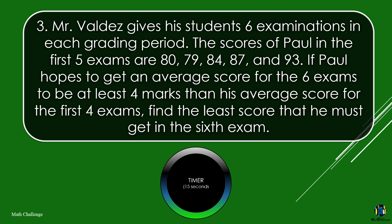Mr. Valdez gives his students six examinations in each grading period. The scores of Paul in the first five exams are 80, 79, 84, 87, and 93. If Paul hopes to get an average score for the six exams to be at least four marks more than his average score for the first four exams, find the least score that he must get in the sixth exam.